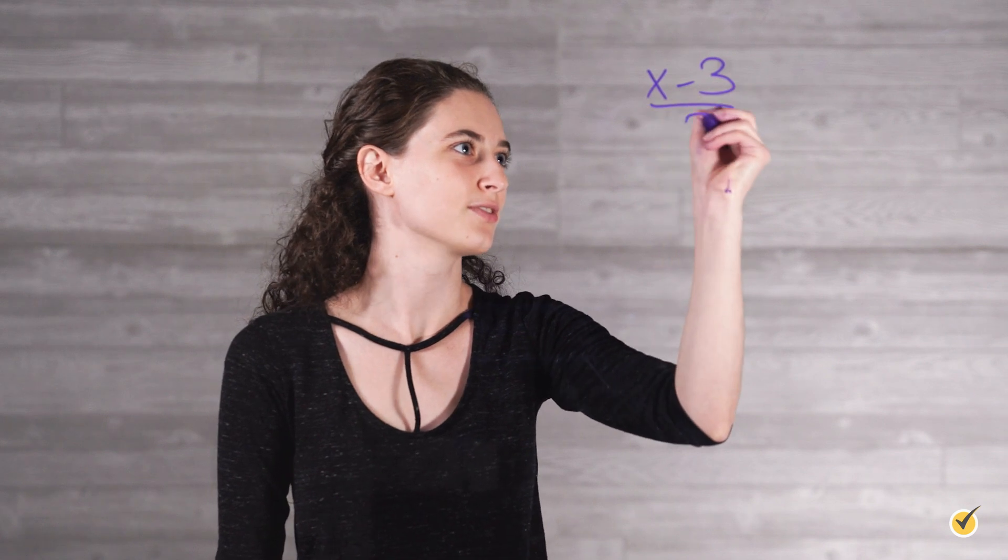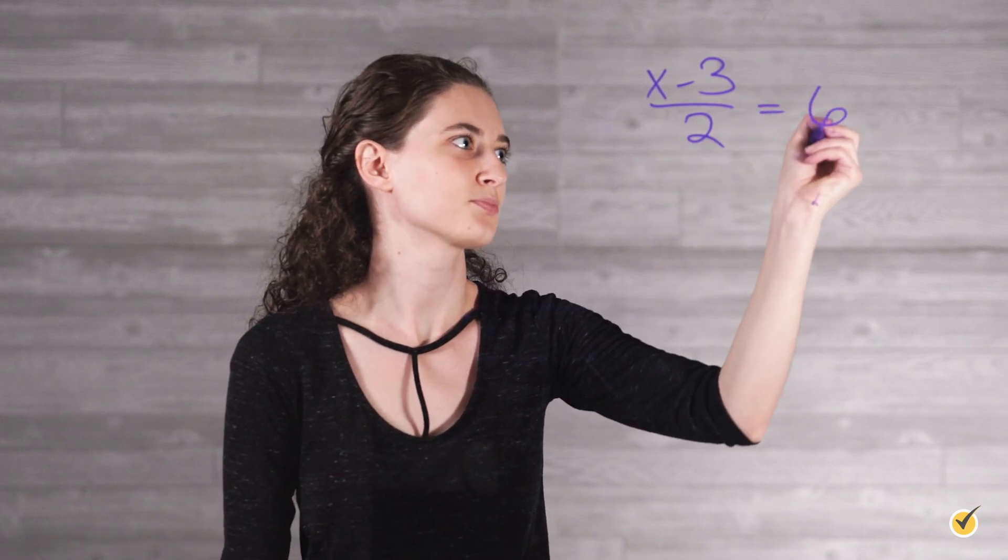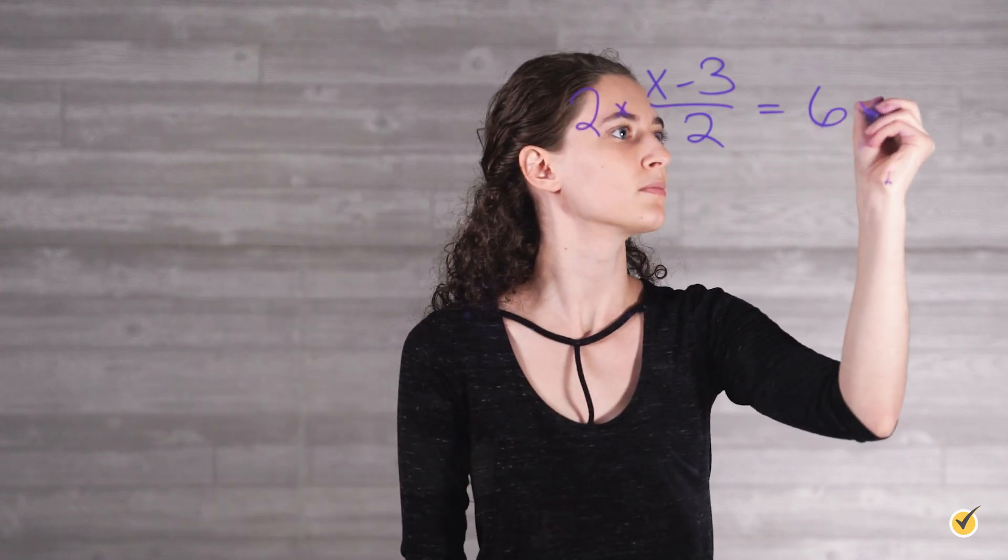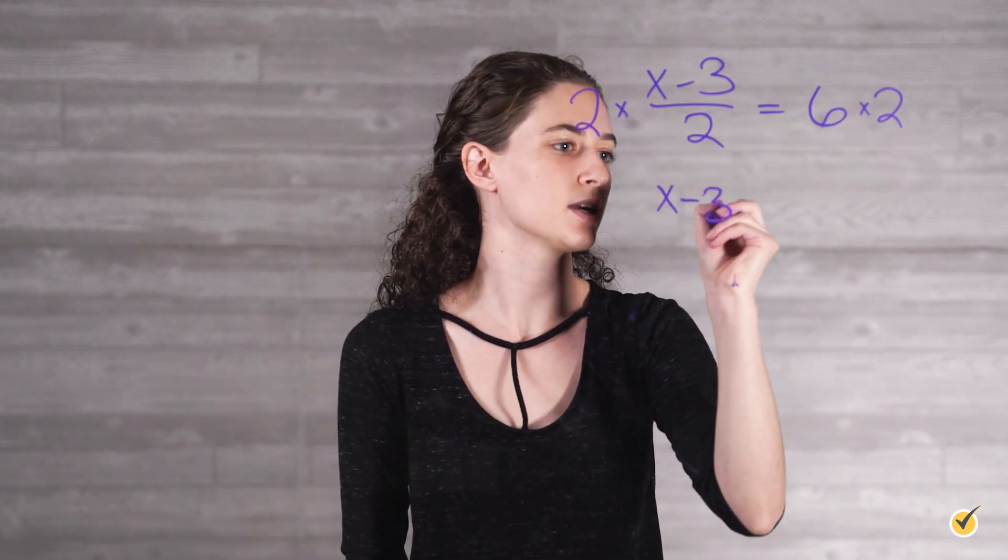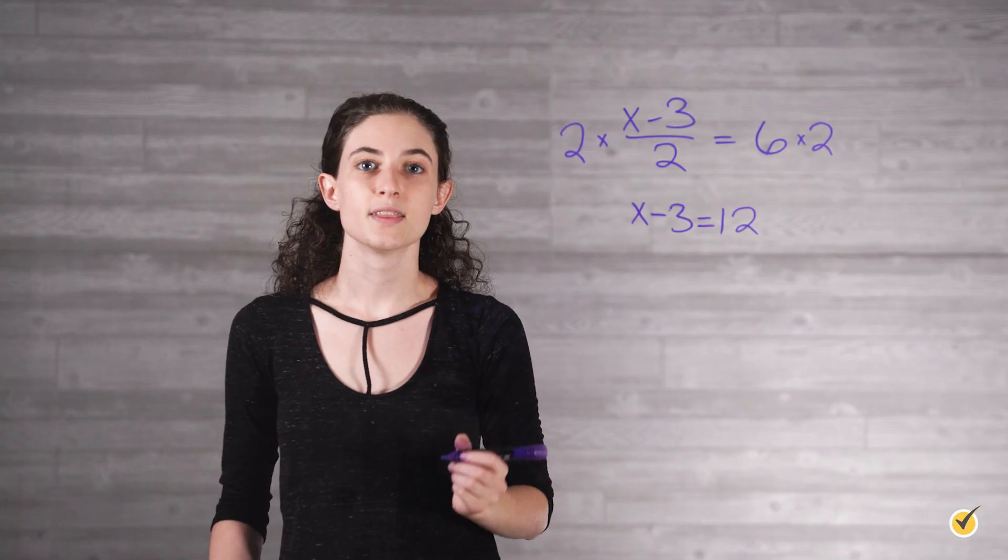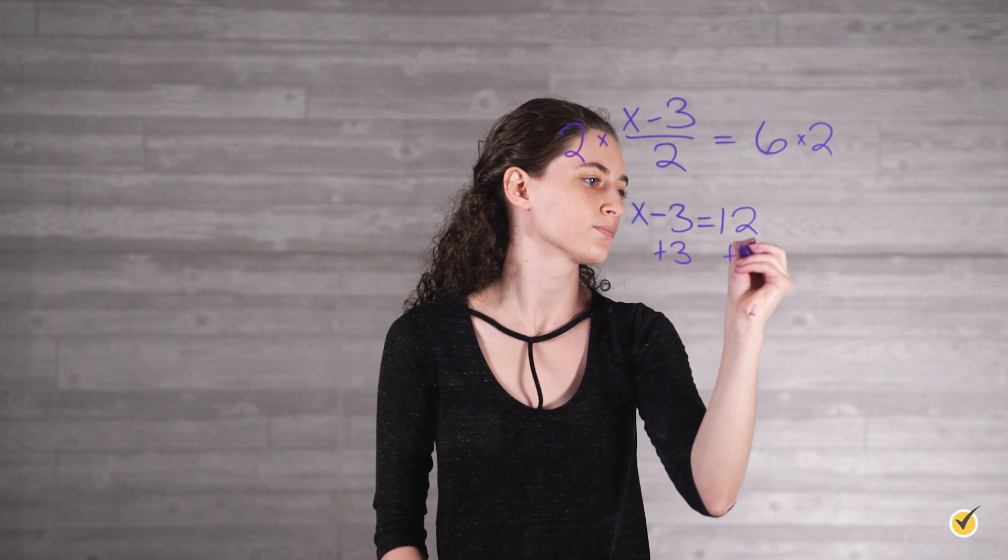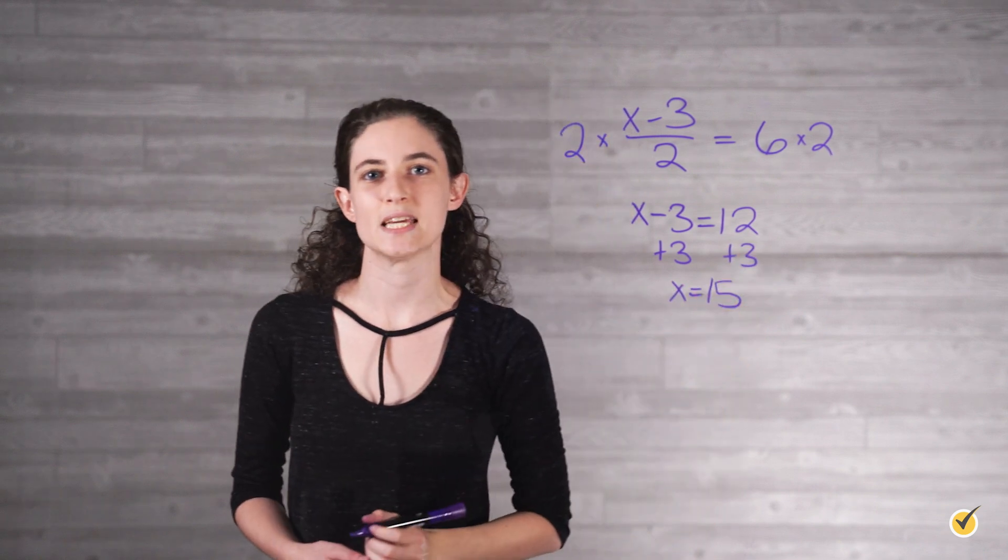Solve (x minus 3) over 2 equals 6. Make a 1 by multiplying both sides by 2: x minus 3 equals 12. Then make a 0 by adding 3 to both sides: x equals 15.